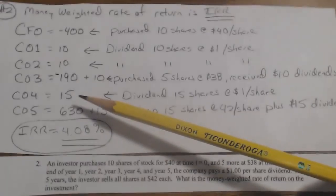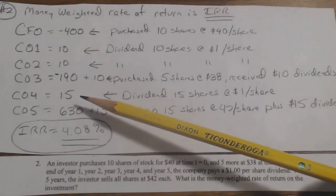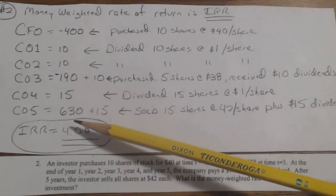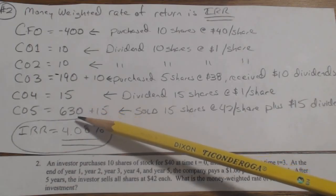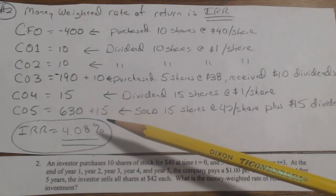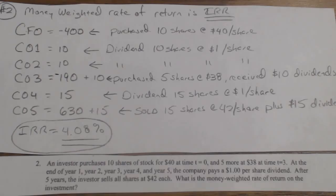Now you have all 15 shares, the 10 you had here and the 5 that you just bought. So the next year, in period 4, you get $15 of dividends. And then at C05, you sell the shares and you get $42 each. And since you have 15 of them, that's $630 plus the $15 dividend. The IRR works out to be 4.08%.